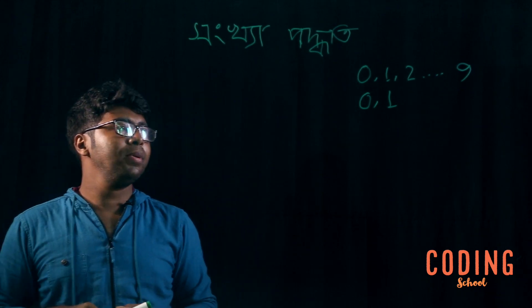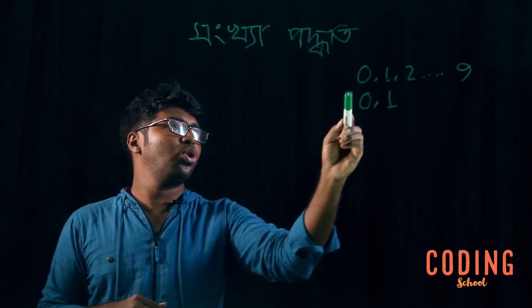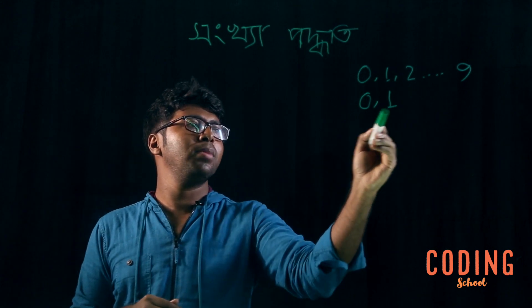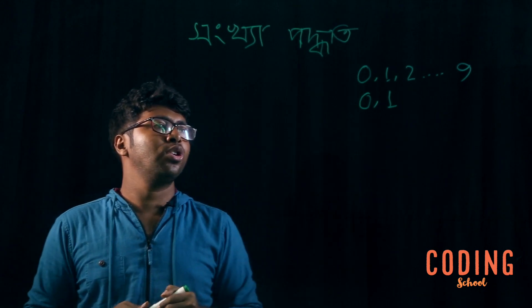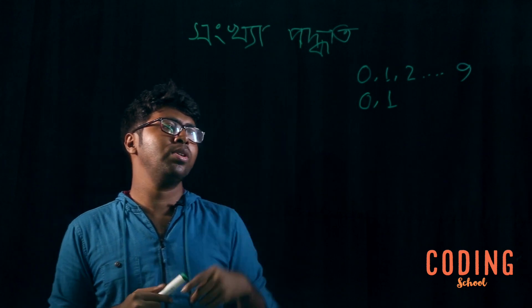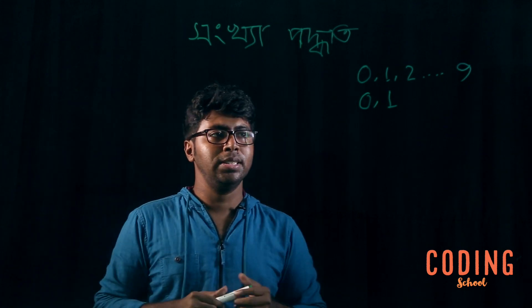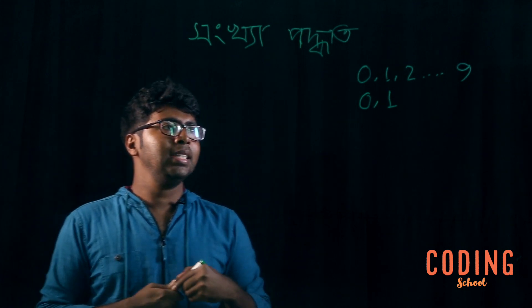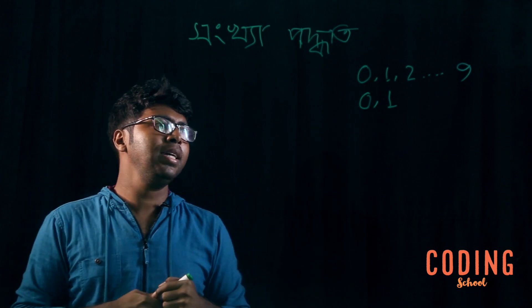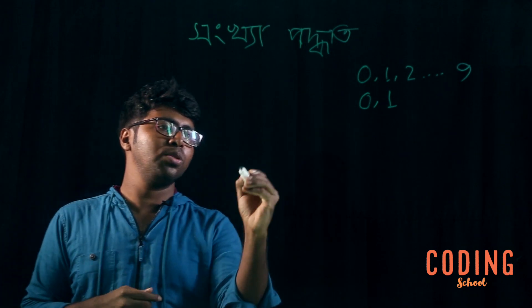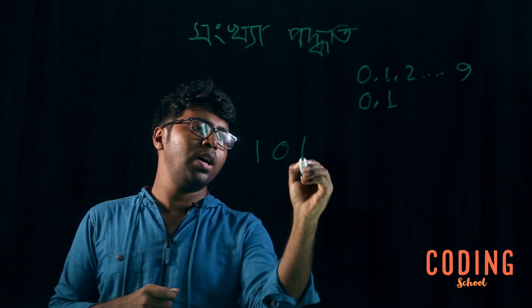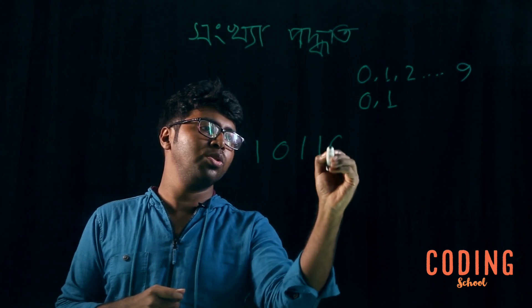This is the decimal system. Now let's see how we interpret the binary number system. In the binary system we have: 1, 0, 1, 1, 0, 1.